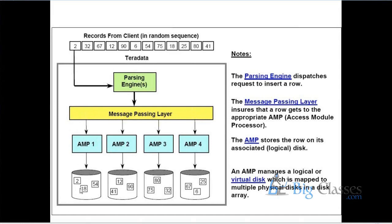Once each AMP finishes processing on its disk, it sends the result to the Message Passing Layer. Once all AMPs have sent back their result sets, the Message Passing Layer clubs the results into a single set and sends it back to the client. The processing is efficient because we are not loading all the data onto a single drive — we distribute data across multiple disks so each AMP has very minimal data to process. If all records go into one particular drive, the processing time of that process would be very high.